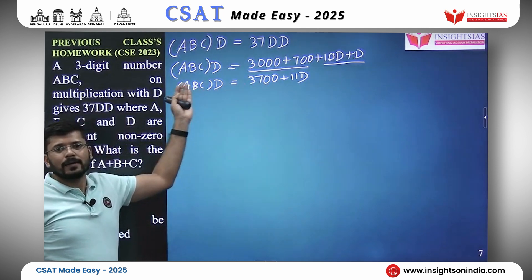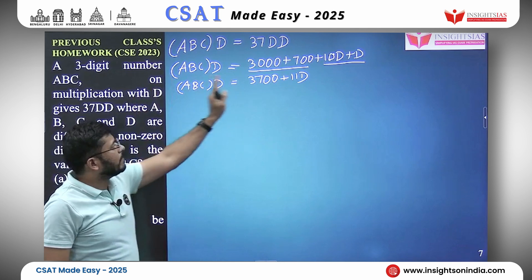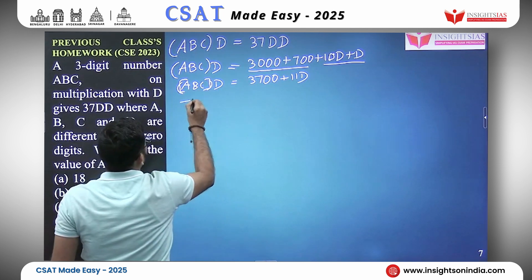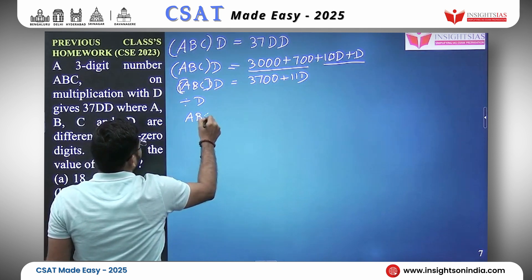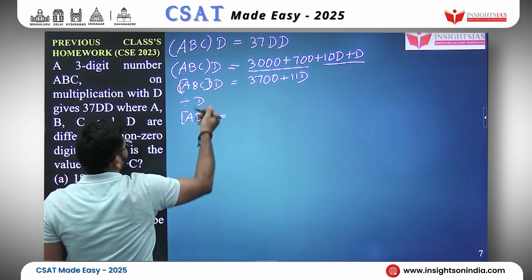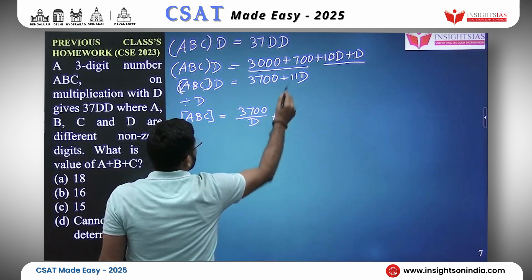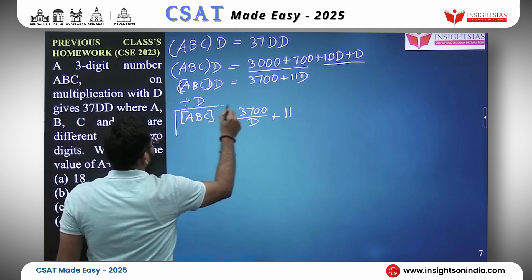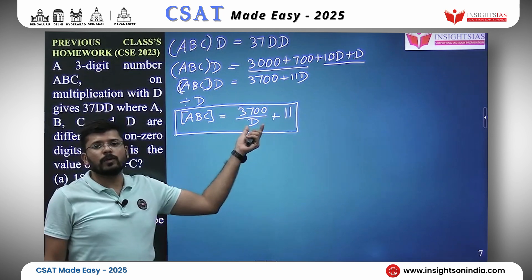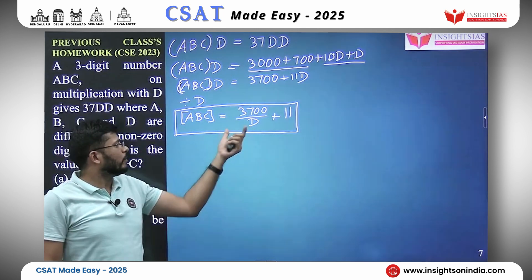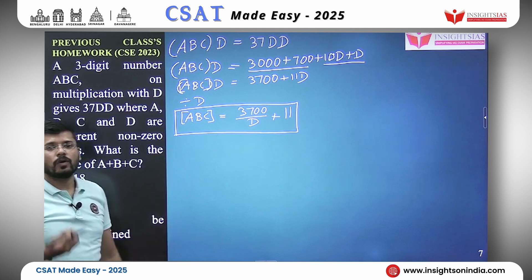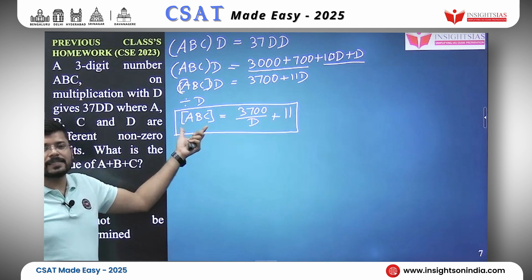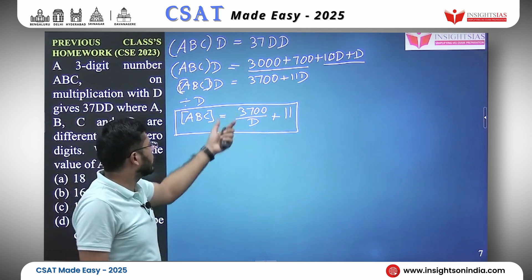This does not look easy to solve directly, so we divide both sides by D to get ABC equals 3700 divided by D plus 11. Now we need to find values of D that divide 3700 without a remainder, so that ABC is a whole number.